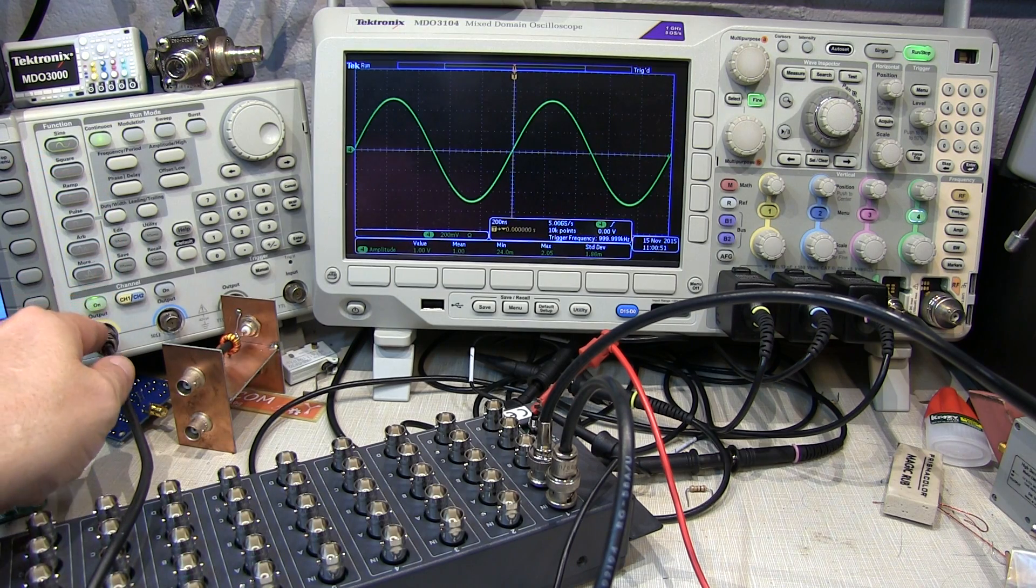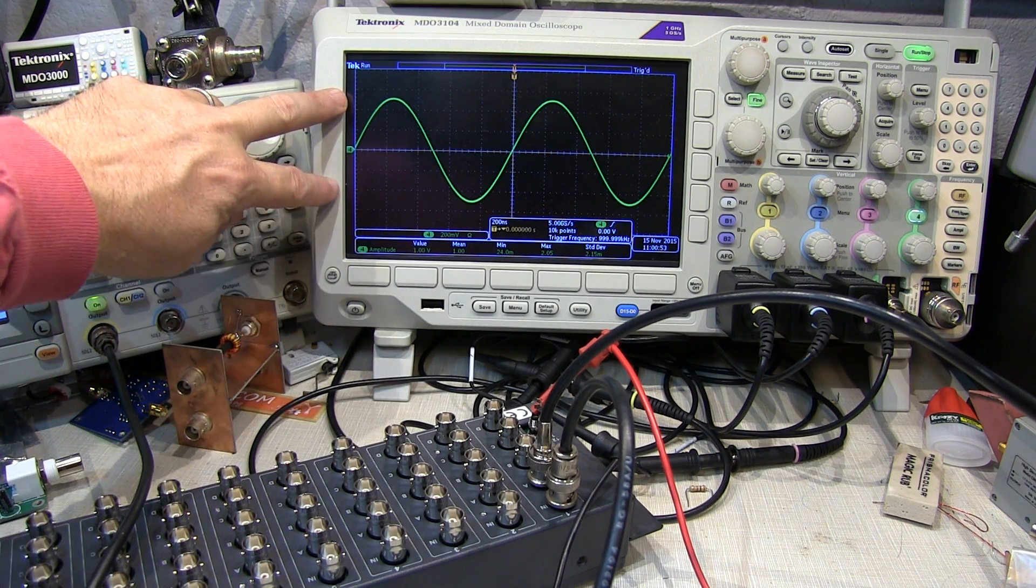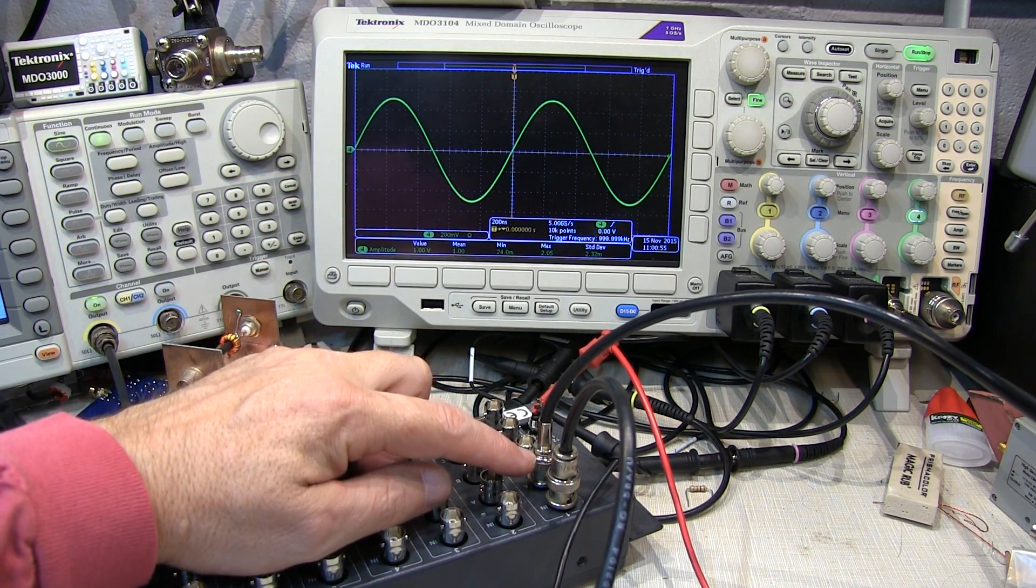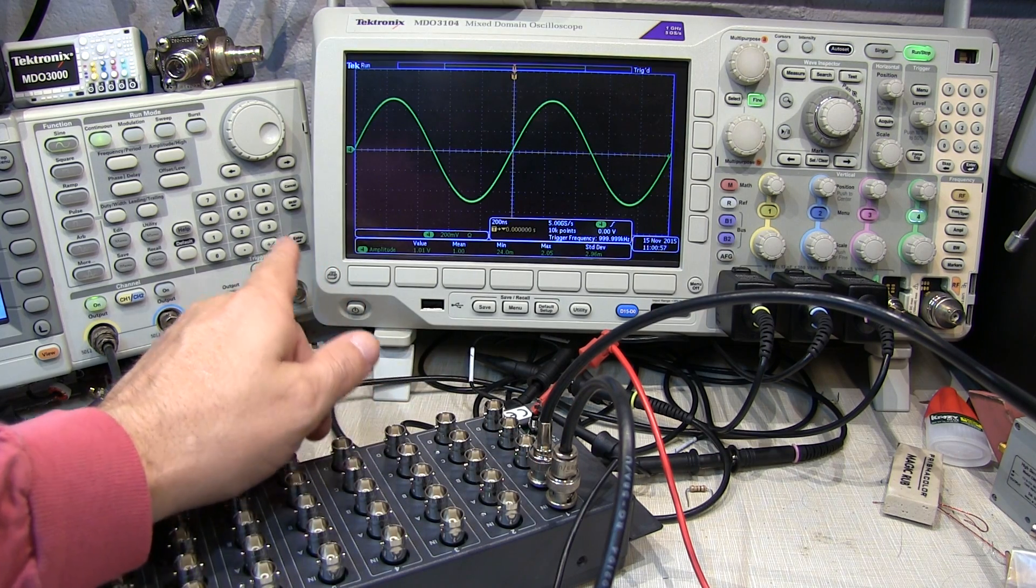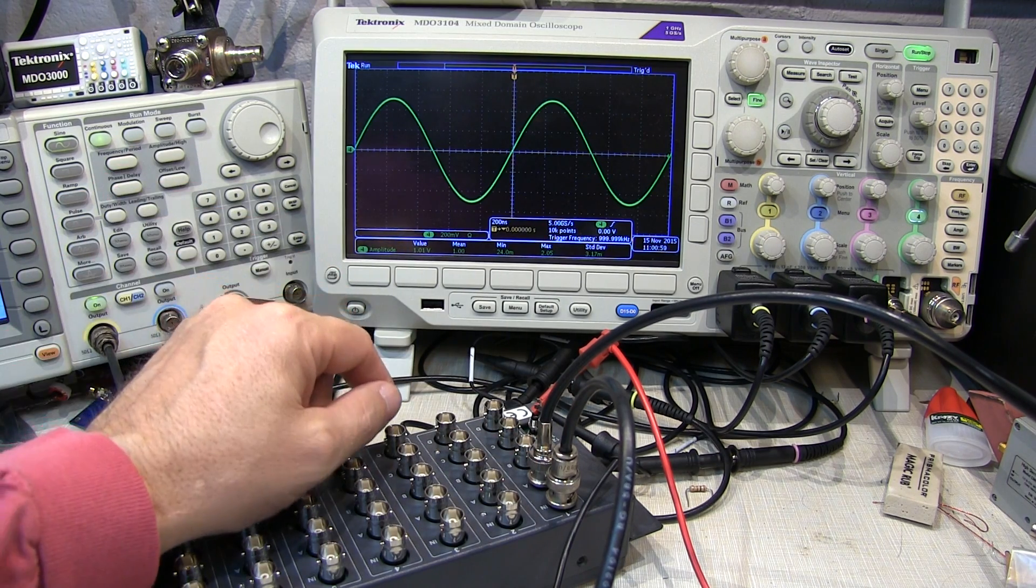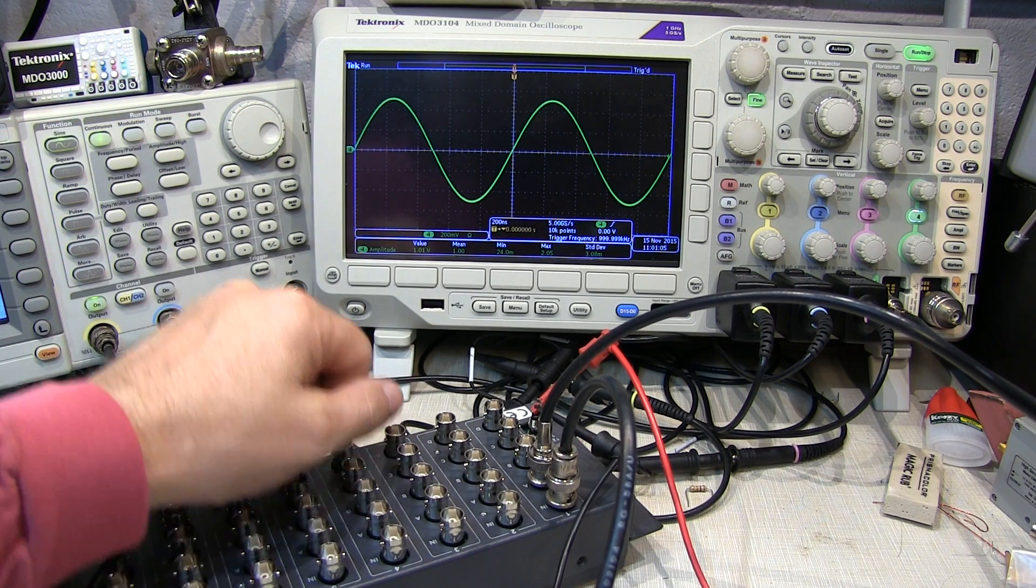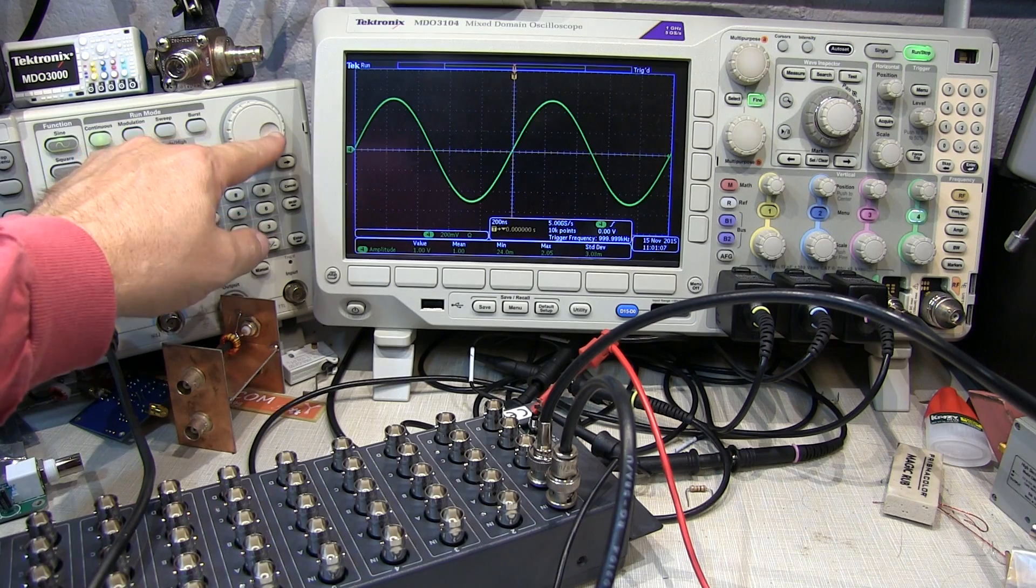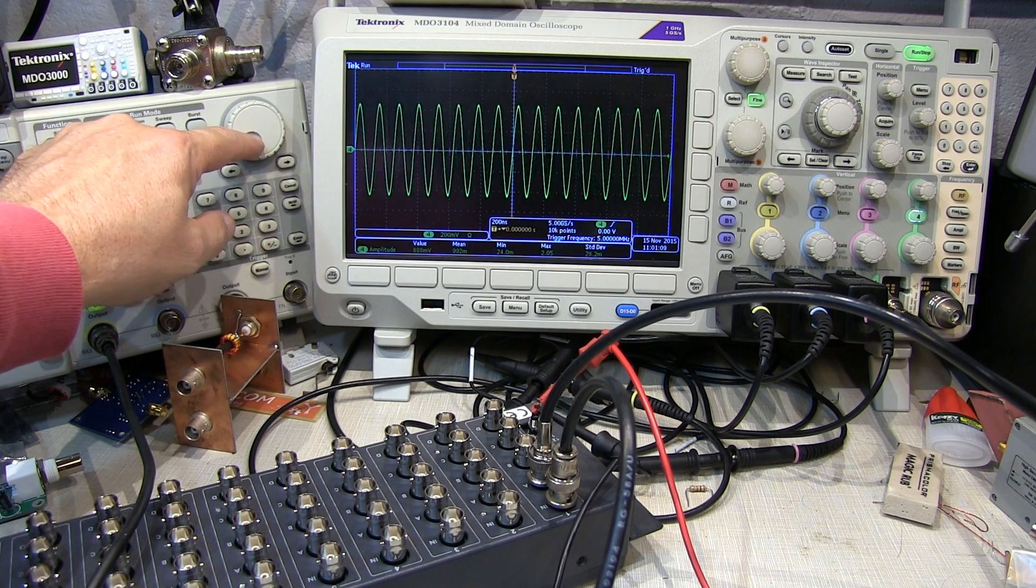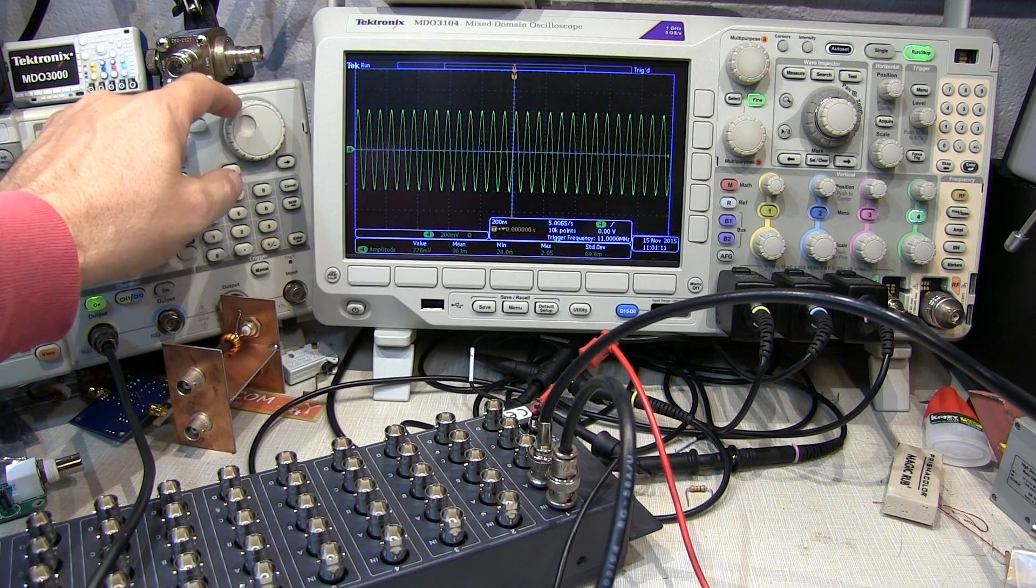So what I did is I adjusted the signal generator to give me a one volt peak to peak output out of the output here. And I'll simply adjust the frequency until that amplitude reduces down to about 0.7 volts. That'll be about the 3dB point. So if we start rolling that frequency up here, we can see the amplitude coming down.